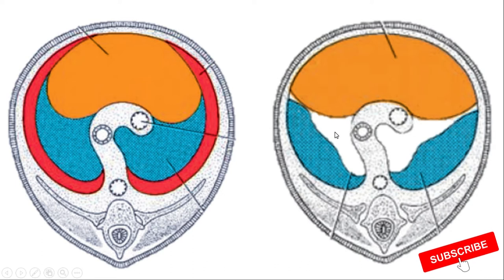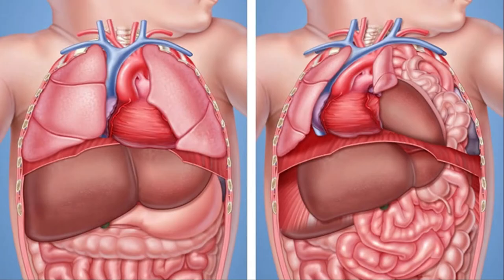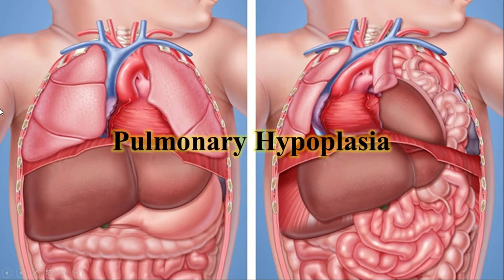Through this defect, abdominal contents can easily enter into the thorax — this is how herniation takes place. These organs in the thorax will compress thoracic structures like the lungs and the heart. Due to this compression, the lungs will not be able to grow properly, especially on the side of the compression.